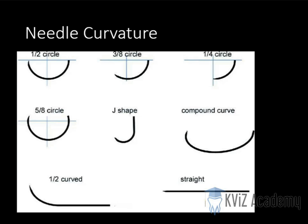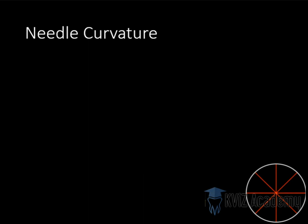Okay, now what is this half circle, 3/8 circle, 1/4 circle? Now we have a circle. We divide it into 8 quadrants. Four, and then divide them further into 8 quadrants.